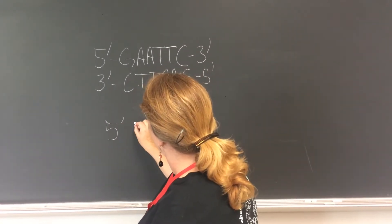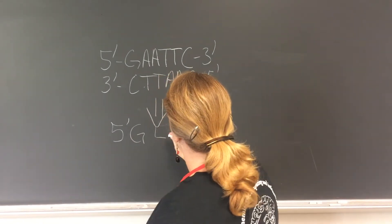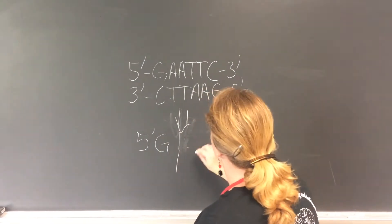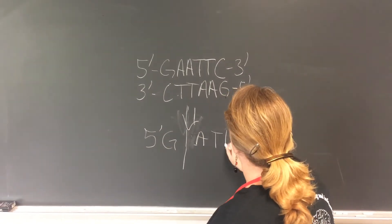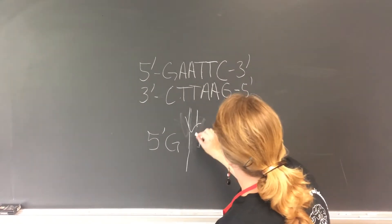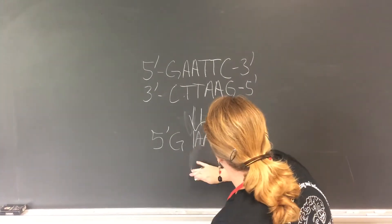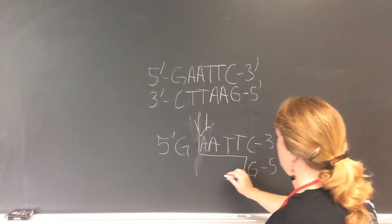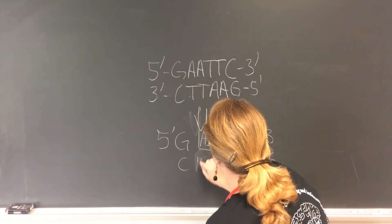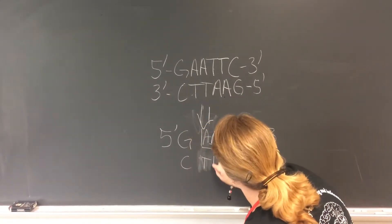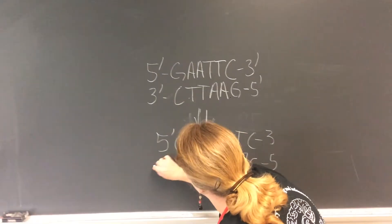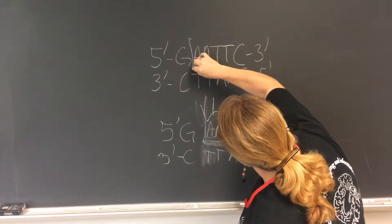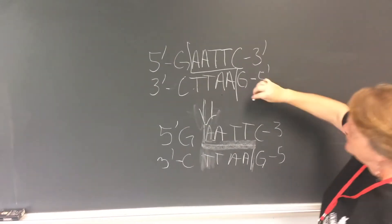So it's going to go five prime, then we're going to have the G, then there'll be a space like this—so here's our cut, so we'll have then A-A-T-T-C, three prime. And then it's going to go like this, so here will be our G five prime and then it'll be C-T-T-A-A, so here's our three prime. So the cut is going to be right here, or in this case it will be right here.